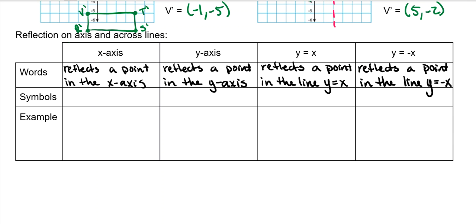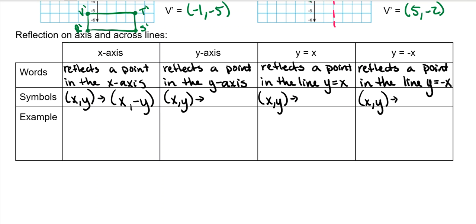There are mapping symbols for this. You can also use the mapping symbols to actually find your answer without a graph. Whatever your original point is, we always start with x comma y for all mapping rules. For the X axis, your x value stays the same and your y changes signs. For the Y axis, your x changes signs and your y stays the same. For y equals x, your x and y flip-flop — your y becomes your x and your x becomes your y. And for the y equals negative x line, your x and y flip-flop and they change signs.